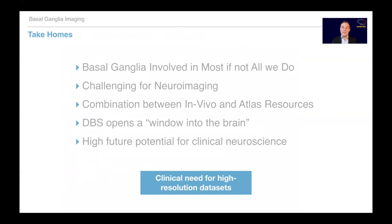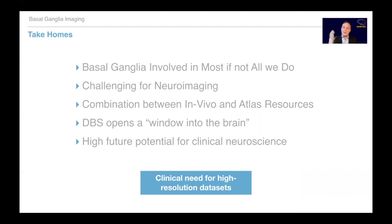As take-home messages: the basal ganglia are involved in most if not all of what we do, so they are important for your science as well. They are challenging for neuroimaging, and a combination of in vivo and atlas resources is really fruitful going forward. Brain stimulation can open a window into these obscure structures, and there is high future potential for clinical neuroscience. There is a clinical need for high-resolution datasets — so please share your ultra-high-resolution data with us.